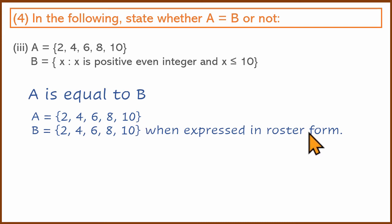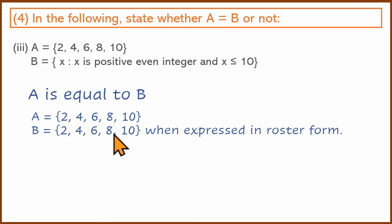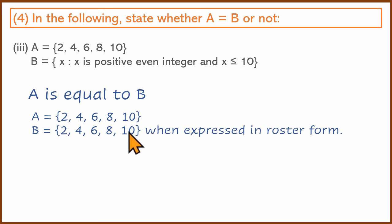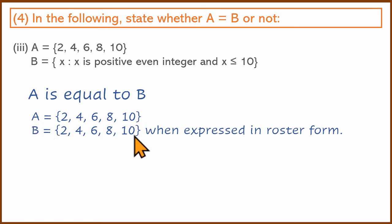Now B is in Roster Form. The most important elements — positive even integers starting from 2: 2, 4, 6, 8, 10. So you expand B as {2, 4, 6, 8, 10}. Compare A and B — exactly the same elements and the number of elements is the same. This is equal.